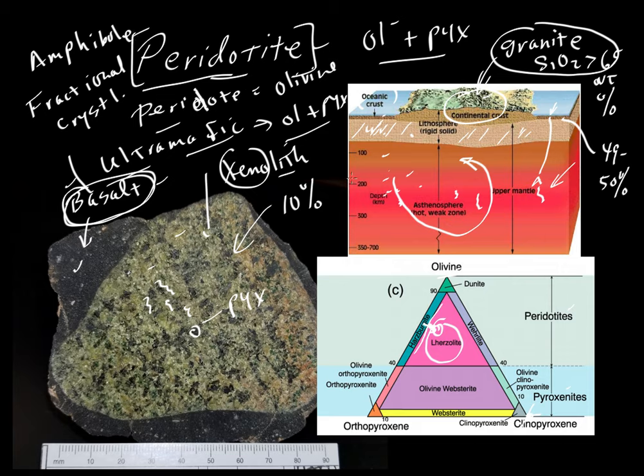So peridotite is the bulk of the mantle, and it is also being partially melted, so it is the source of basalt and eventually also the source of continental crust when sufficient fractional crystallization takes place to give us these higher silica liquid compositions.